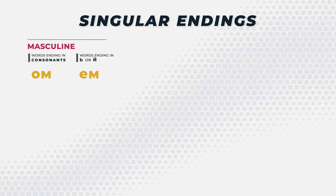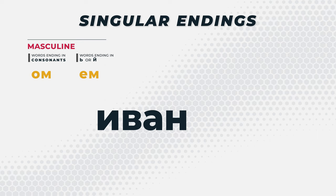Let's start with the endings — the singular masculine. For most nouns ending in consonants, the ending is going to be OM. And for most nouns ending in a soft sign or any kratkoy, the ending is going to be YEM. So those are your two primary endings for masculine: OM and YEM. Let's take the example of Ivan. We want to put Ivan into the instrumental case. Because it ends in a consonant, we just add the OM ending — Ivanom. So Ivan goes to Ivanom.